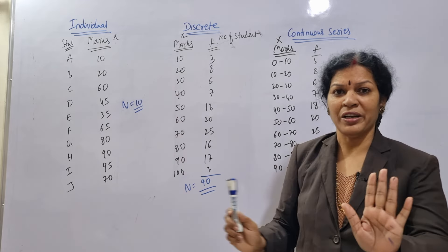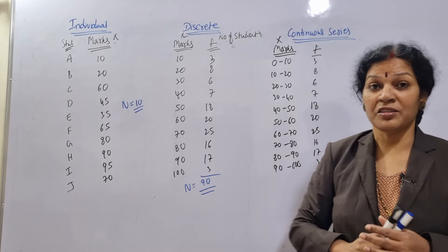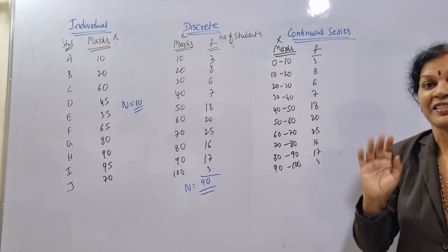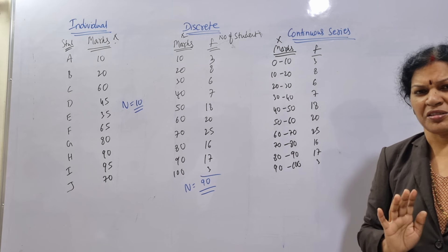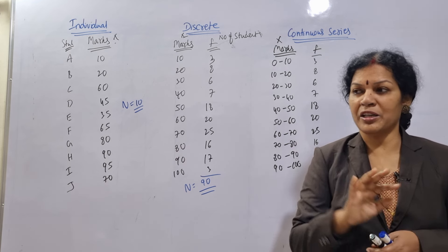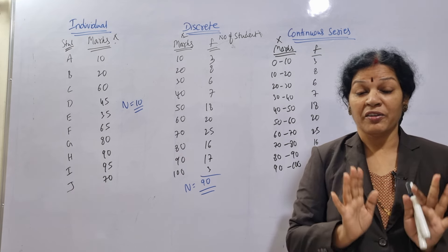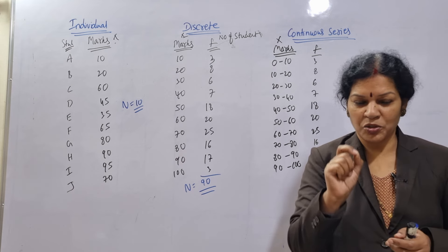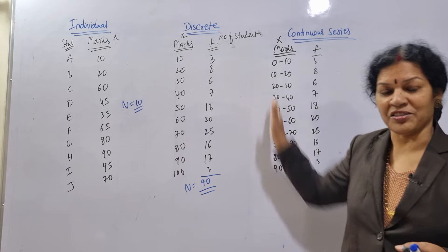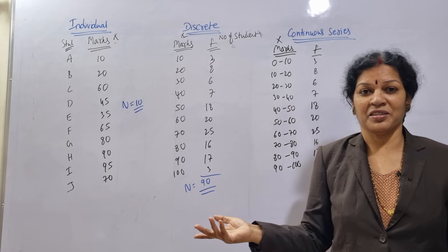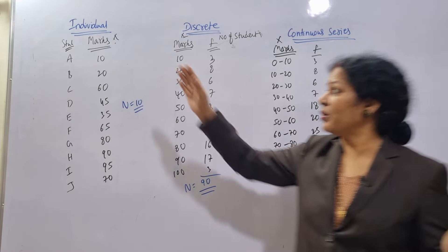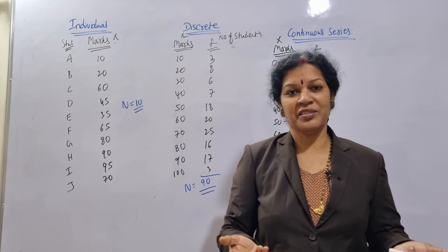To summarize: individual series — only x, no frequency. Discrete series — x with frequency, where x is a single value. Continuous series — x with frequency, but x is in class intervals. Whenever in an exam or problem you need to calculate quartile deviation, mean deviation, skewness, or anything — first identify the series. Search for frequency: if frequency is given, check whether x is a single digit (discrete series) or a class interval (continuous series). If no frequency at all, it is individual series.